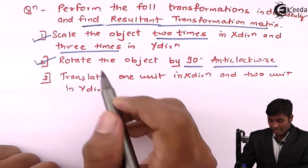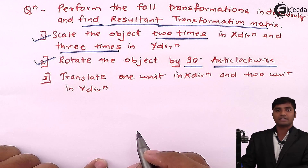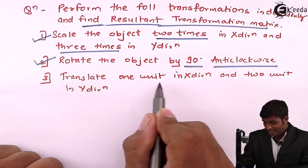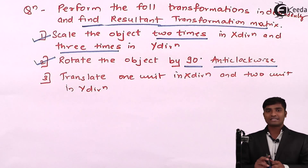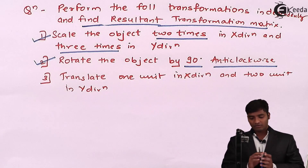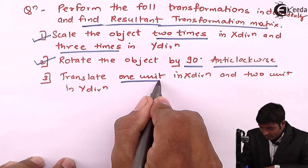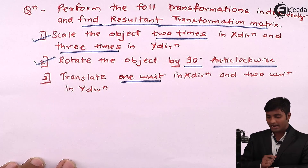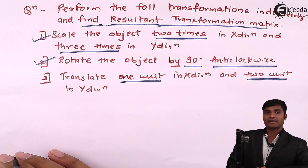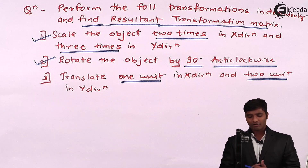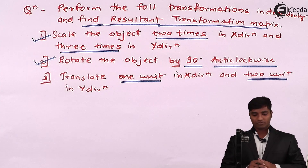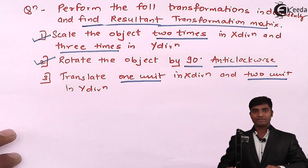The third and last transformation is translation: translate one unit in the x direction and two units in the y direction. Translation means moving from one point to another linearly, so tx equals 1 and ty equals 2. Now we will perform the transformations independently and find the resultant transformation.